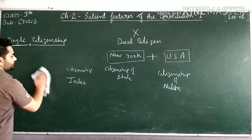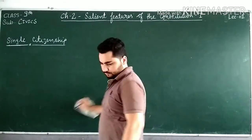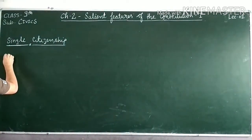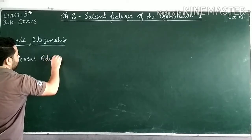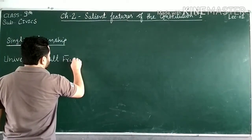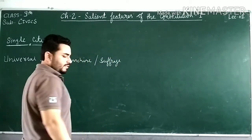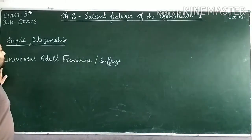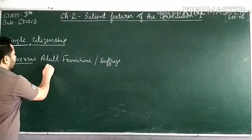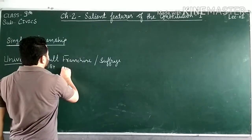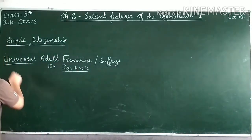Now we will study the second feature of our constitution, which is universal adult franchise, also called universal adult suffrage. What is the meaning of universal adult franchise? Universal means it applies to the entire universe — in most countries it is applicable. Adult means 18 years and above. Franchise means the right to vote.